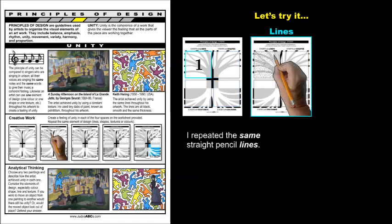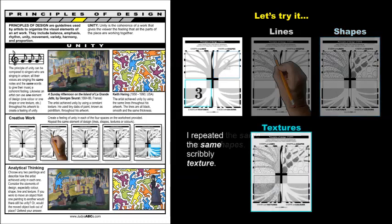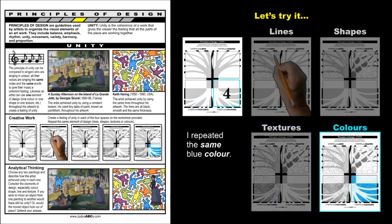In the first space, I repeated the same straight pencil lines. In the second space, I repeated the same circular shapes. In the third space, I repeated the same scribbly texture. In the last space, I repeated the same blue color.